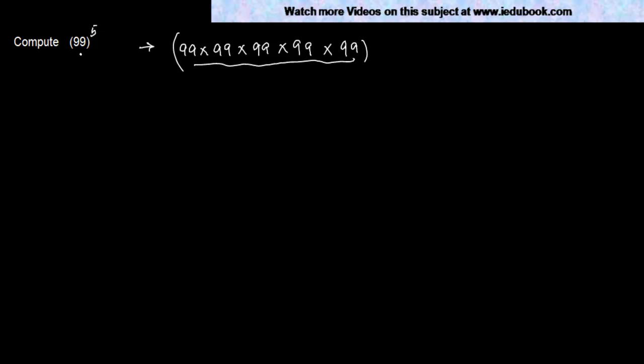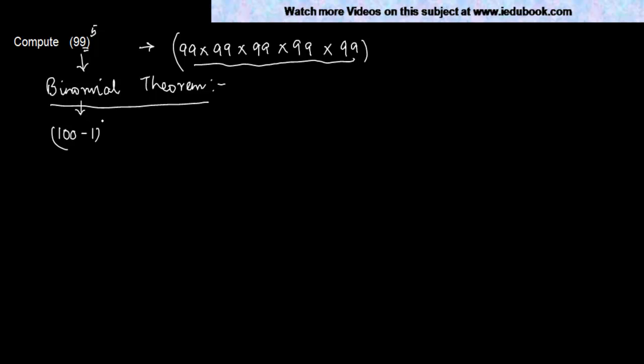Let's compute 99 to the power 5. In simple terms, you could calculate this as 99 × 99 × 99 × 99 × 99, but we can use the binomial theorem to our advantage to calculate this quickly and correctly. We know the binomial theorem is meant for two terms, but what stops us from writing 99 as (100 − 1) to the power 5? So this becomes something like (a − b) to the power 5.